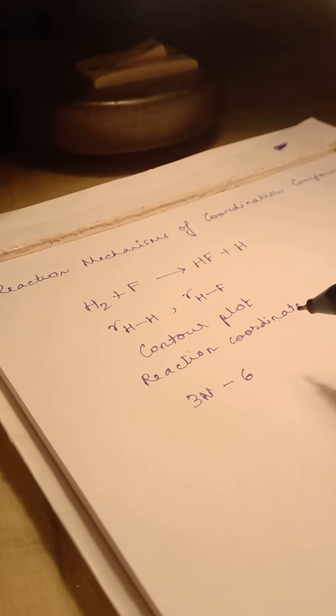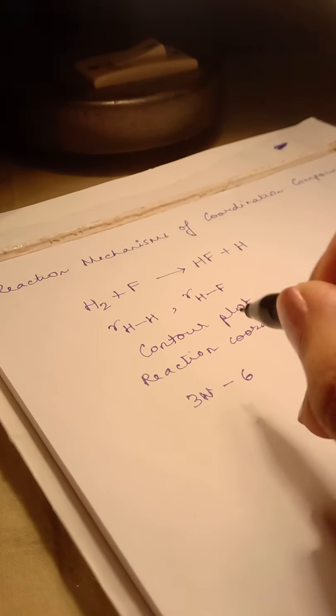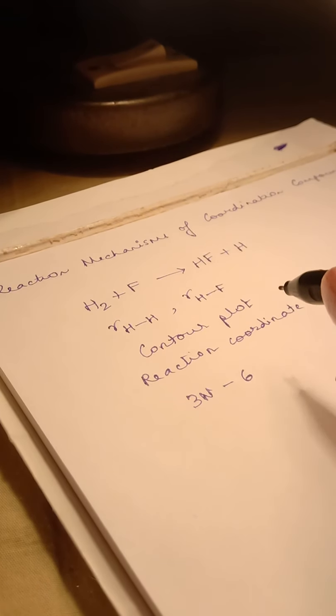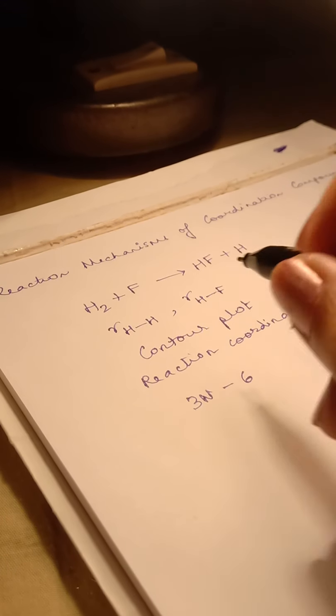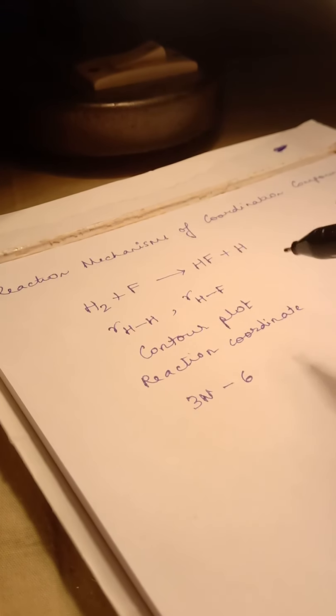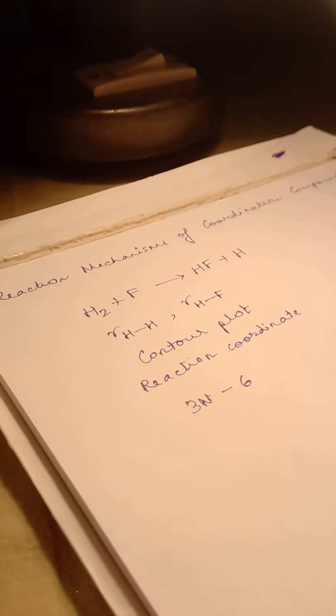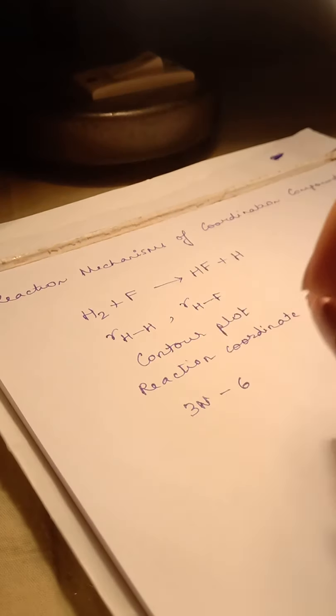What is the reaction coordinate? The reaction coordinate is basically an average. It is an average of the change in all the bond lengths and bond angles which happens as the reaction progresses, or as the reactant gets converted to the product.